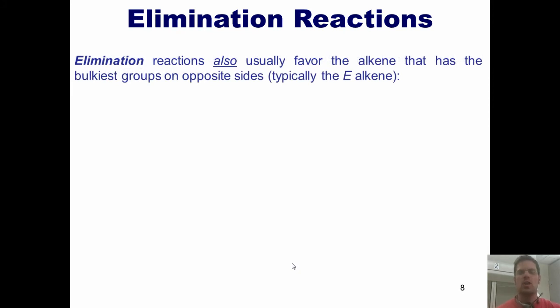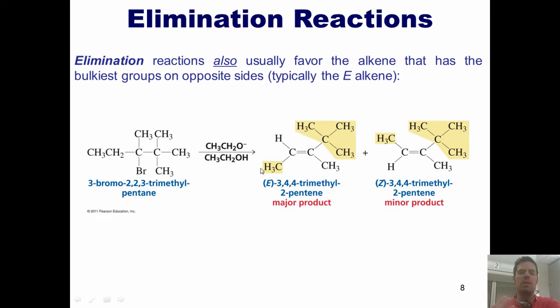Now, elimination reactions also usually favor the alkene that has the bulkiest groups on opposite sides, as I mentioned earlier, typically the E alkene. Here's an example where my base only has one proton that it can possibly eliminate, the one located on the carbon to the left of the bromine. As this base comes and strips that proton, thrusts the electrons down to form a carbon-carbon double bond at this position, and kicks off the bromide, there are two different potential isomers that I could form: the E isomer shown here, or the Z isomer shown here. Which of the two is going to be more stable? Of course, it's going to be the E isomer, where the two largest groups are on opposite sides of the double bond. I never get tired of that joke. The reason, of course, is because it's more stable to have the bulkier groups as far away from each other as possible.